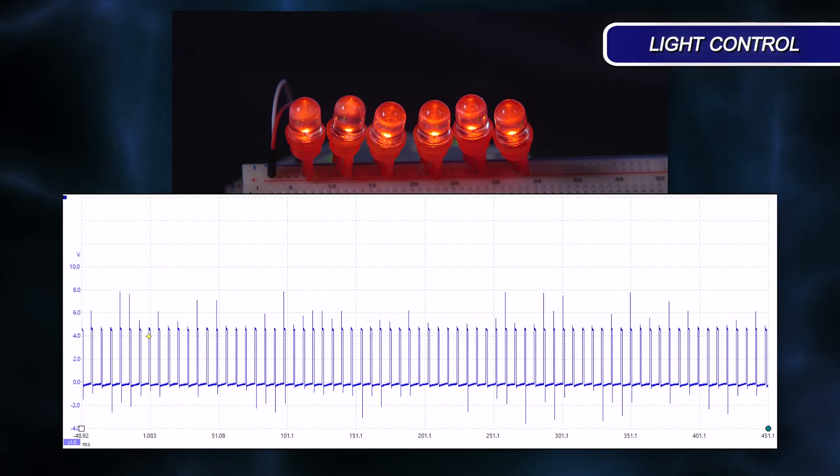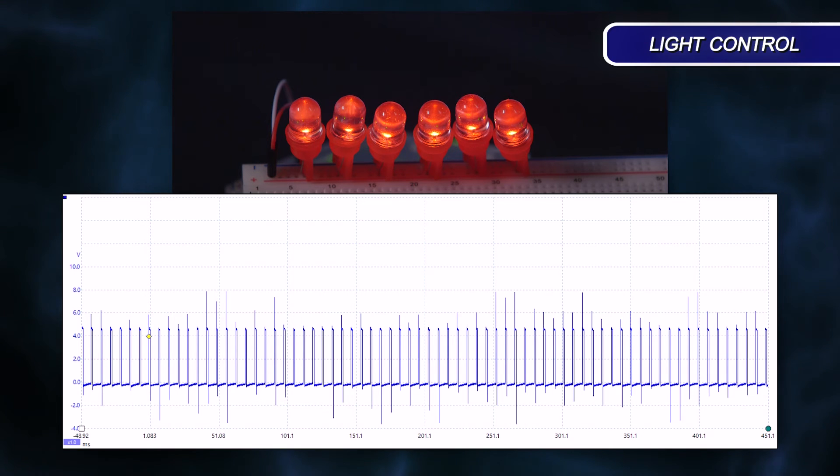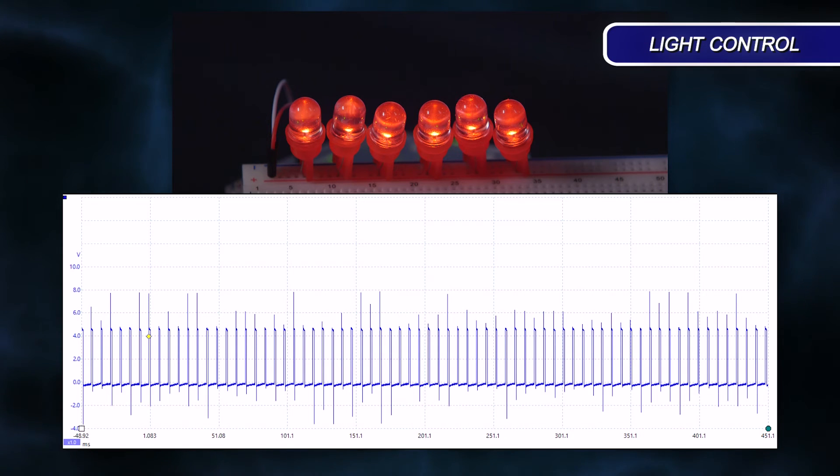By increasing the frequency, but keeping the duty cycle the same, we can eliminate the blinking effect. Our current draw, and therefore the lamp output, remains the same.